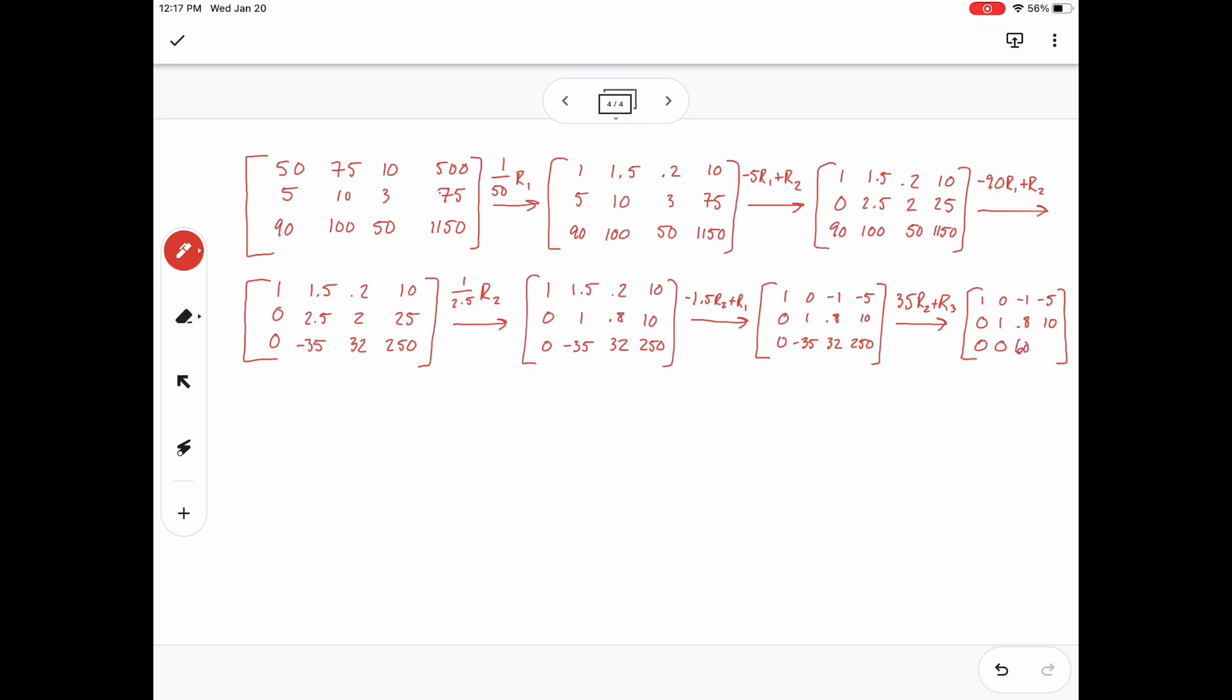Then I want the 60 to be a 1 in the third row. So I'm going to multiply the third row by 1 divided by 60. And then from there, I want that negative 1 to be a 0. So I'm just going to add row 3 to row 1 since they are actually additive opposites already.